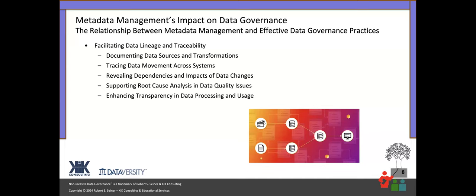Facilitating data lineage and traceability — documenting sources and where data came from — is something people have always wanted, even back to the days of data warehousing. To raise people's data confidence level, they need to know where the data came from, and that's recorded in the metadata. As part of your metadata management effort, you must document where data came from, what transformations happened to it along the path, and trace metadata movements across systems. Supporting root cause analysis and enhancing transparency in data processing — knowing who has access to what data along the way and where changes are made — are all things recorded in your metadata to support your data governance program.